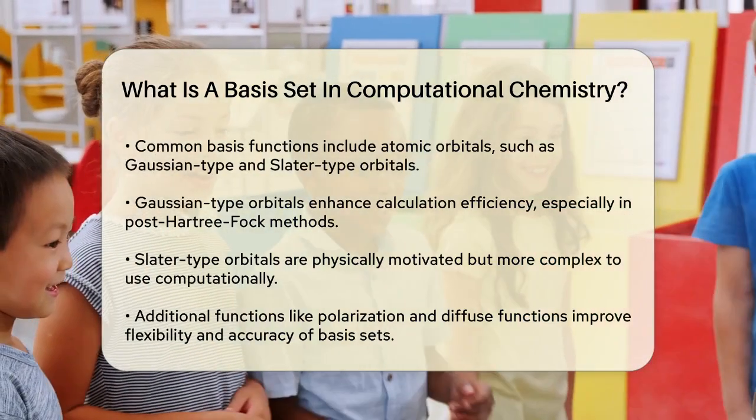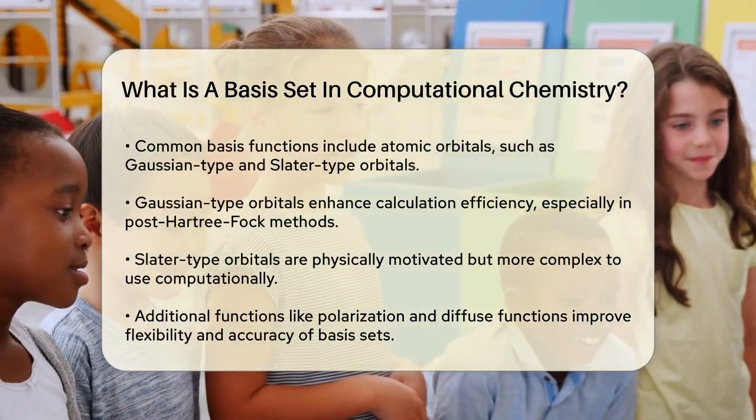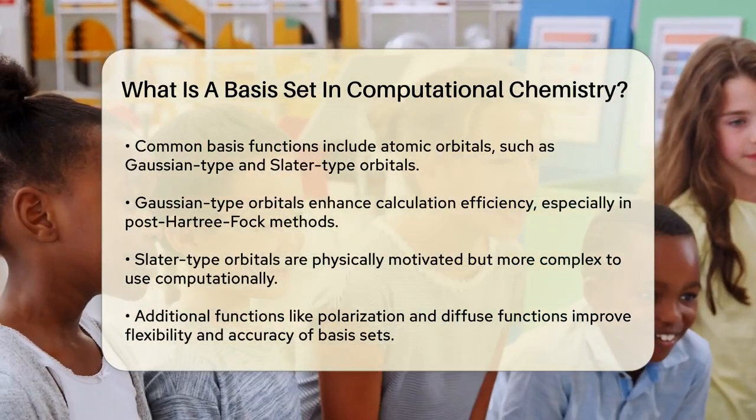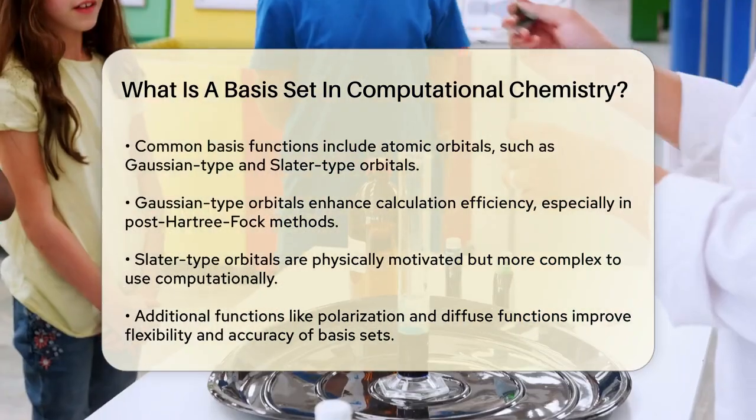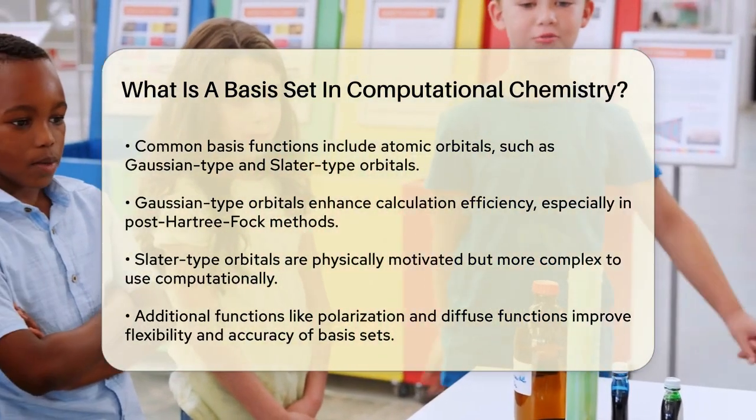To make these basis sets more flexible and accurate, additional functions are often added. For instance, polarization functions help describe the asymmetry in electron density around an atom, which is crucial for modeling chemical bonds.